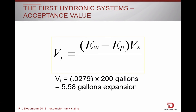Here is an example. If the volume of the water was 200 gallons in the system, and the expansion of the water minus pipe at 180 degrees was 0.0279, the tank in the attic would need to handle 5.58 gallons.